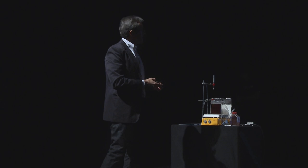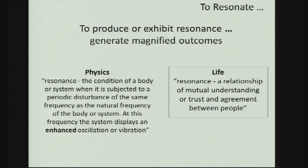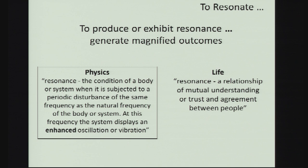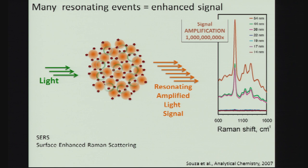That's where my life definition comes in, and now we have to make the two resonate. This is true in physics and physical chemistry: when you have many resonating events, you have an enhanced signal. This is a surface-enhanced Raman spectrum of a molecule, imidazole. This signal here is a billion times larger than the little bump at the bottom — because you have these nanoparticles that resonate with the molecules, that resonate with light, and you get this huge signal amplification.